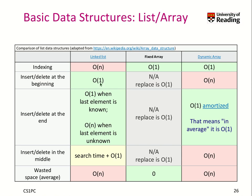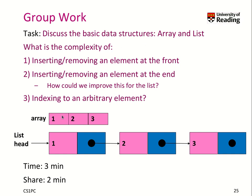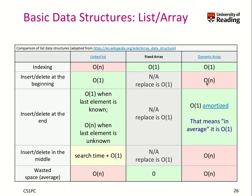Insert and deletion of a linked list is O of 1 because we just have to link it. In a fixed array it's tricky — basically you cannot do it. In a dynamic array you can do it, but if you try to remove one element, you have to shift all the other elements one position further. That means you have to move N — or N minus 1, to be precise — elements. So that is, of course, costly. That's why it's O of N.